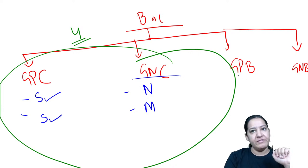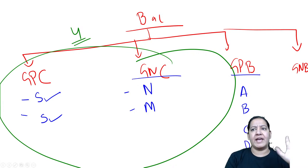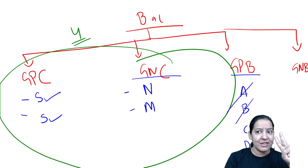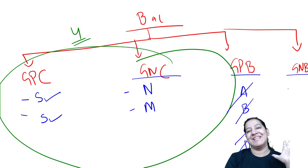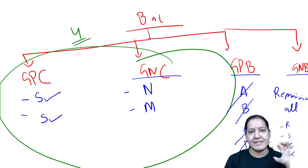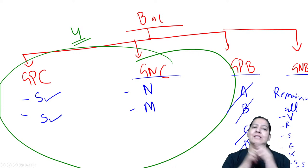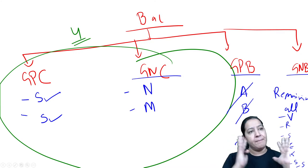After cocci, we will cover gram positive bacilli — five in number: Actinomycetes, Bacillus anthracis, Clostridium, Corynebacterium diphtheriae, and Listeria (ABCDL). Then we will move to the biggest family, gram negative bacilli, which includes Rickettsia, Spirochetes, E. coli, Klebsiella, Salmonella, Shigella, Vibrio, and others. We will cover entire bacteriology one bacteria at a time.